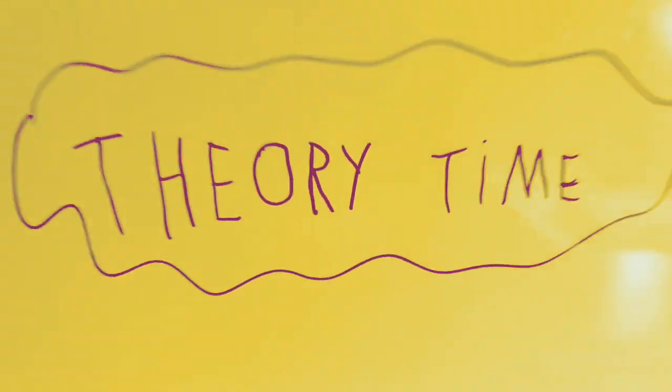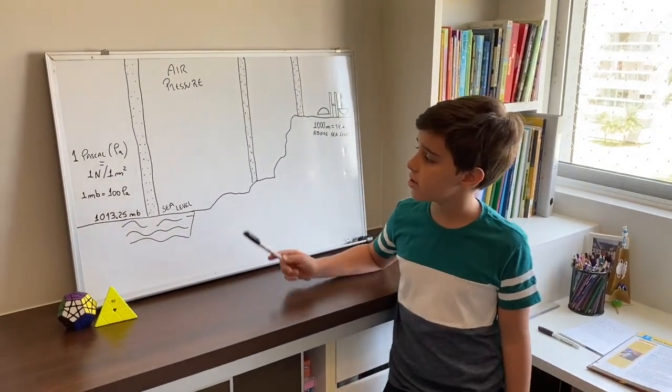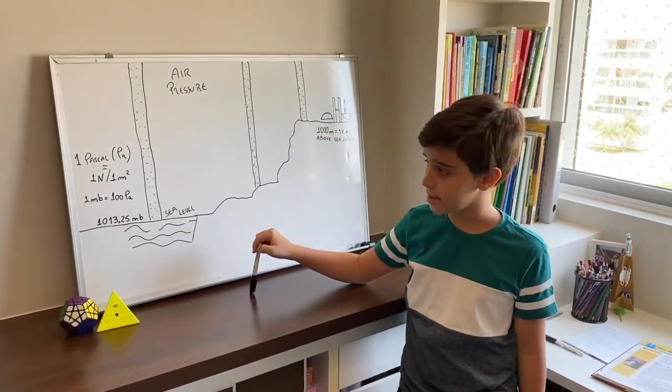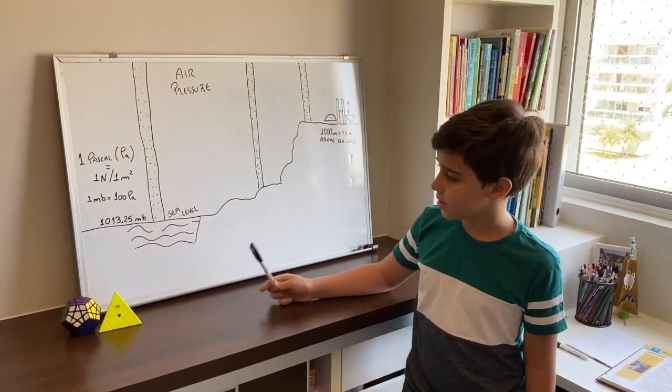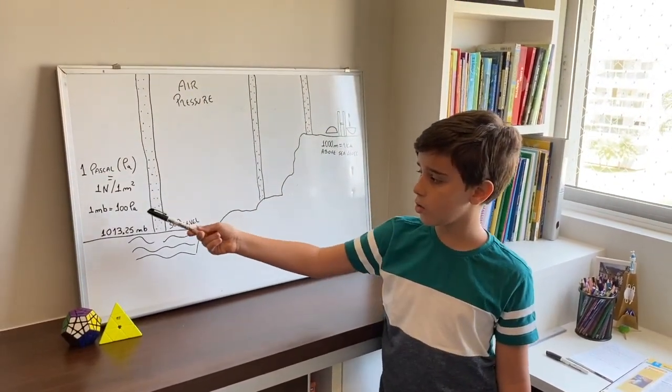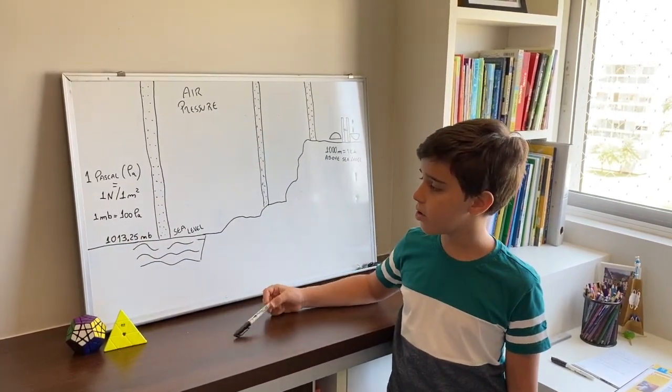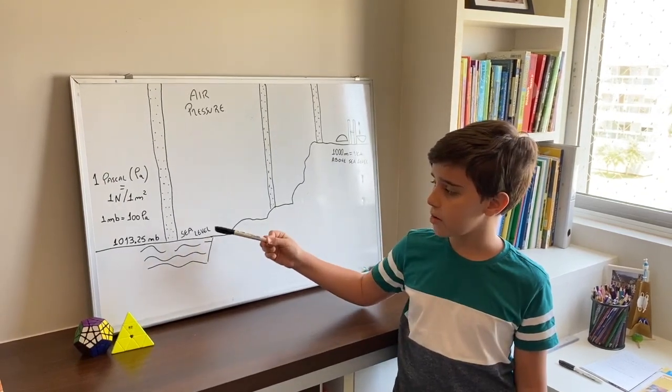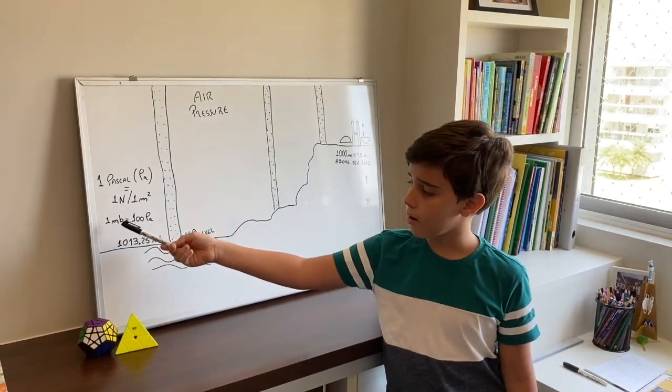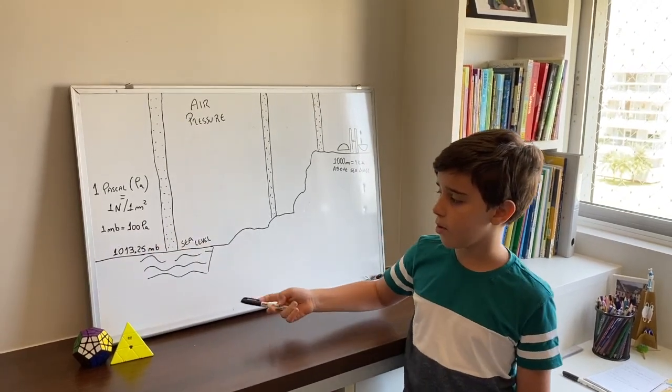What is air pressure? Air pressure is the force of air pushing down on us. We can measure it using the new version of one pascal, that is one newton of force on one meter squared, or we can use the traditional one millibar that equals 100 pascals.